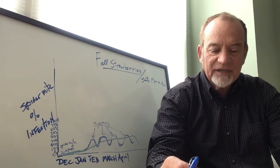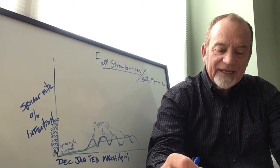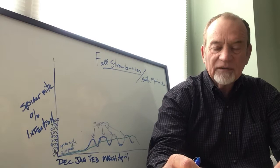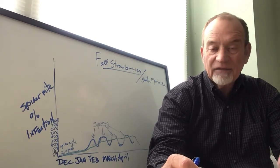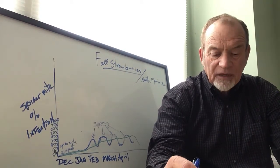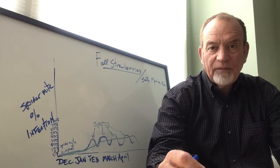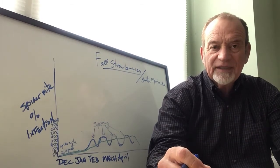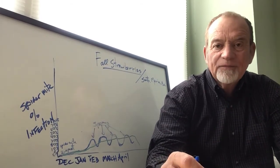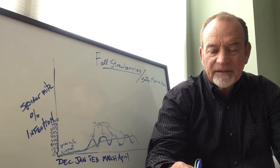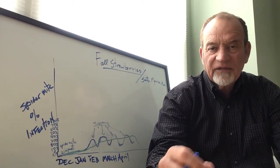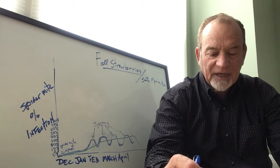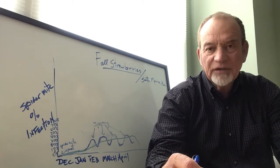Planting dates: growers who plant between October 1st and the end of October will be the first to experience the first hatching of the first generation of the two-spot, and aggressive monitoring is required.